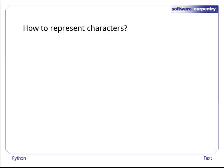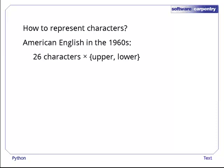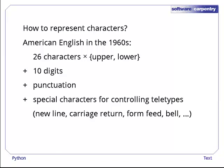Let's start with a simple question: how should a computer represent single characters? For American English in the 1960s, the solution was simple. There are 26 characters which have upper and lower case representations, 10 digits, some punctuation, and a few special characters for controlling the teletype terminals of the period — meaning go to new line, move back to the start of the line, start new page, ring the bell, and so on. There were fewer than 128 of these, so the ASCII committee standardized on an encoding that used 7 bits per character.